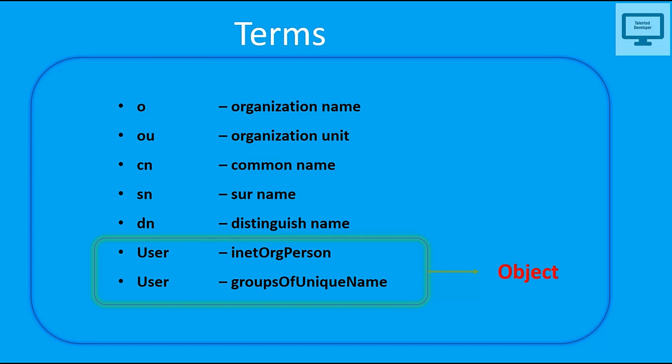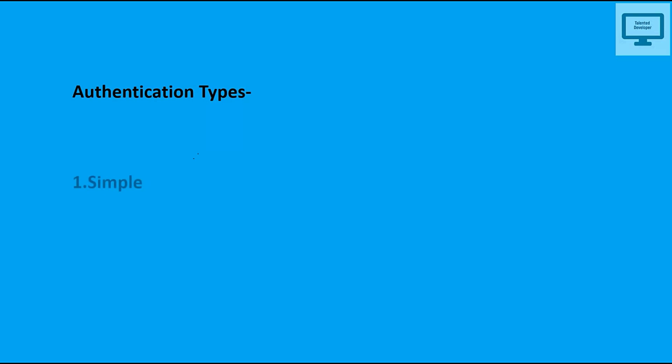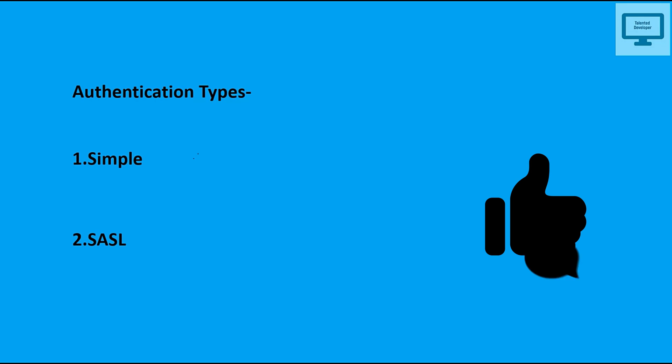Next let's discuss authentication types in LDAP. There are generally two types. The first is Simple: it captures the username and password, then binds and goes to the LDAP database to check if the user is valid or invalid. If valid, it grants permission. The second is SASL (Simple Authentication and Security Layer): it involves more binding steps, allows the client and server to negotiate a particular authentication mechanism, checks the LDAP connection, and they can create their own security policy and configure it. I hope this video has been helpful — please give a thumbs up, like, and write your comments in the comment section.